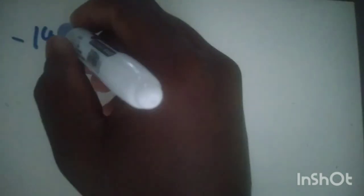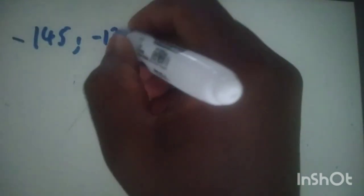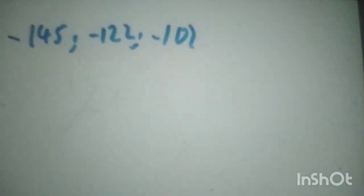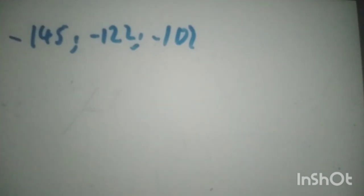Good day everyone. I'm going to do the question that bothers a lot of matriculants in patterns. We are given negative 145, negative 122, and negative 101. These are the first three terms of a quadratic pattern, so we already know that it's quadratic.